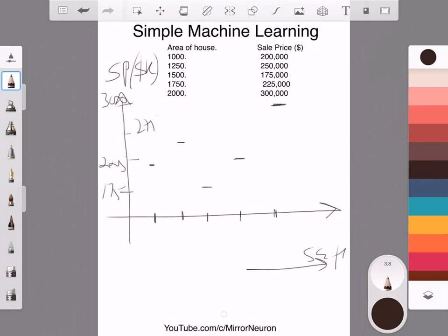And what my friend told me is that your sale price is nothing but a constant line at 175,000 dollars.